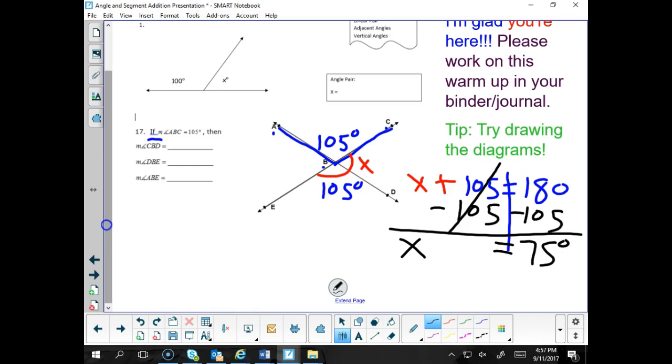All right, so x is 75. Then this angle must be 75 because they're vertical angles which are always congruent. So filling in the blanks, angle CBD is 75 degrees. Angle DBE is going to be 105 degrees. And angle ABE is going to be also 75 degrees.